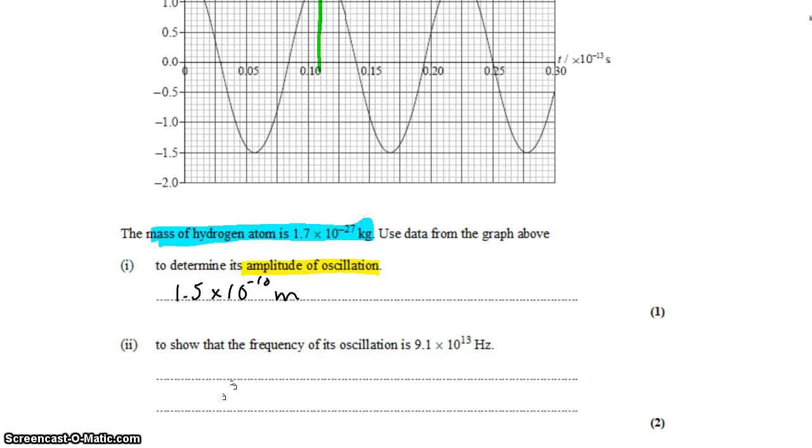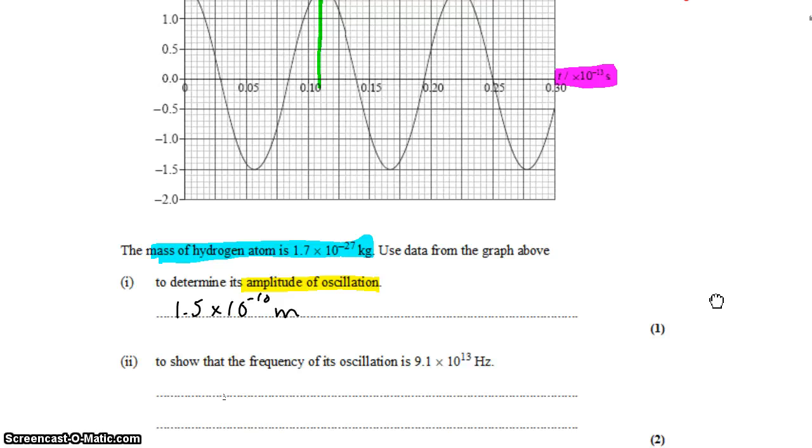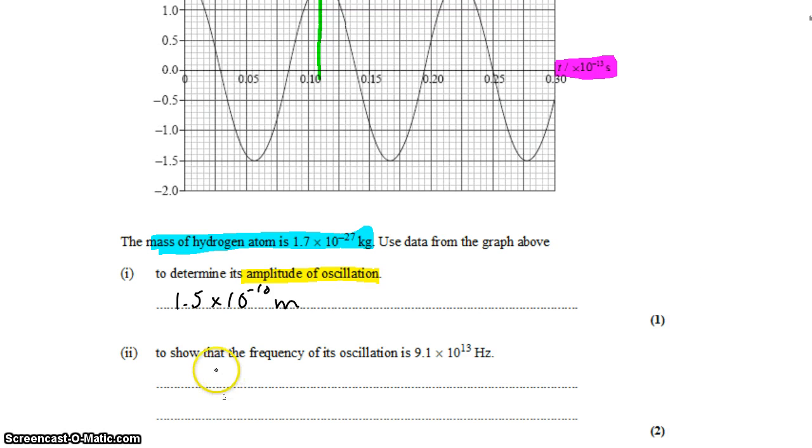For part two we want to show that the frequency of the oscillation is 9.1 times 10 to the 13 hertz. Frequency is not on the graph, instead we have time on the x-axis. From the time we can get the period, and the period is related to the frequency. The frequency is 1 divided by the period.